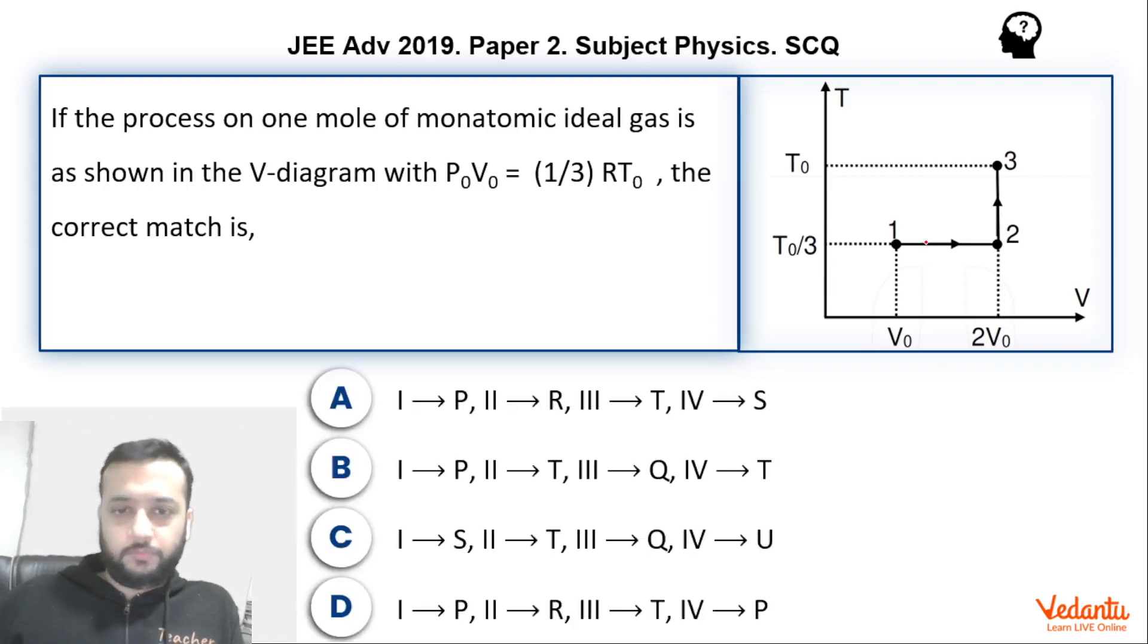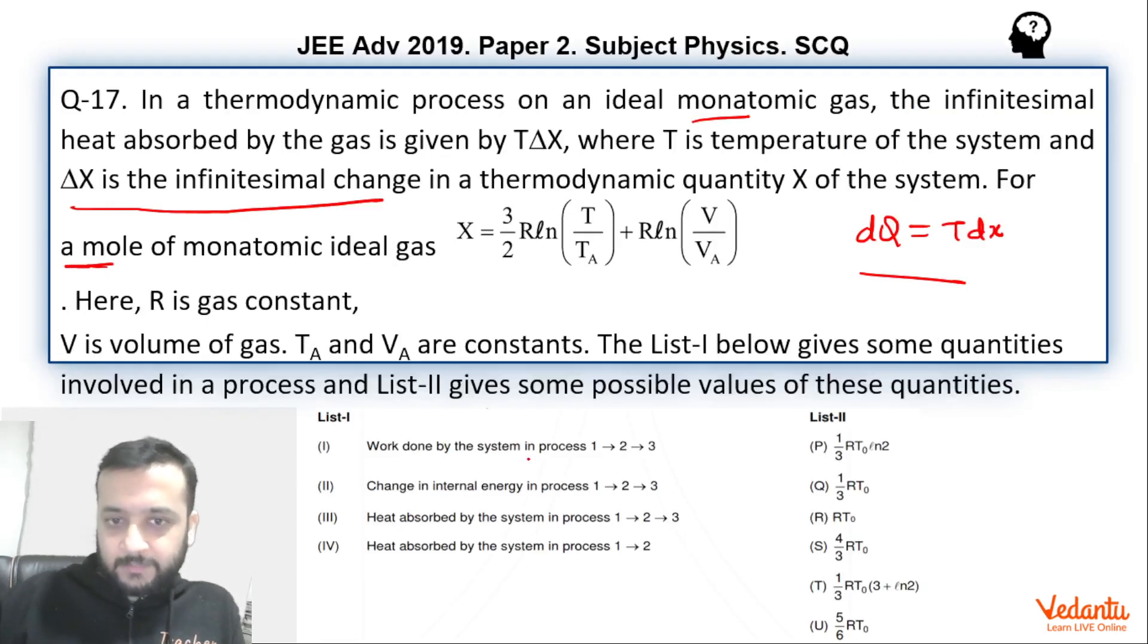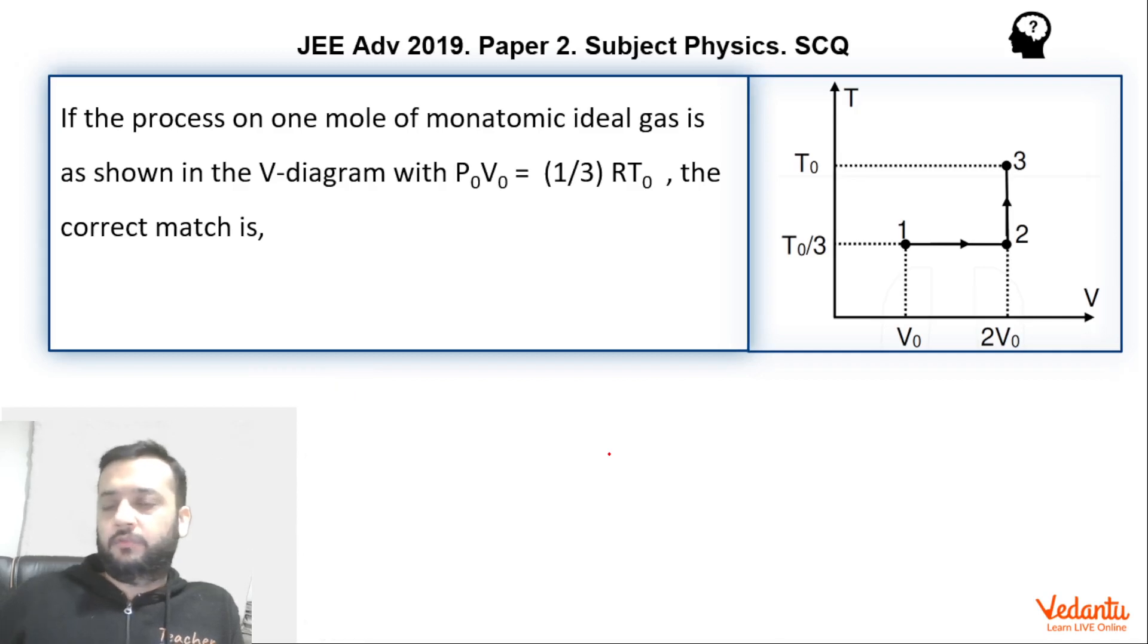So now if you look, work done by the system in 1, 2, 3. So 1 to 2, if we talk about work done by system in 1, 2, it's an isothermal process. So we can say that it will be nR T0/3 ln(V2/V1).